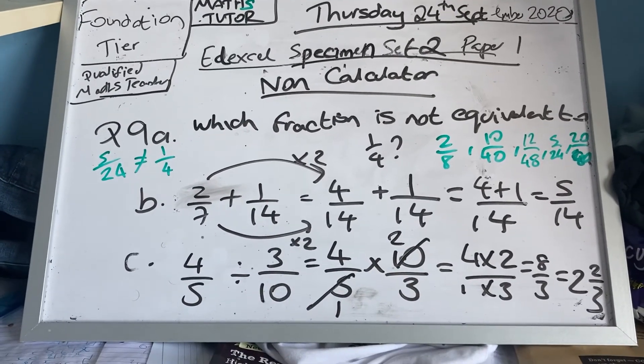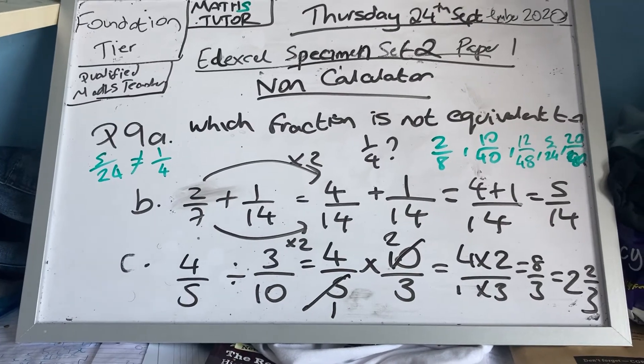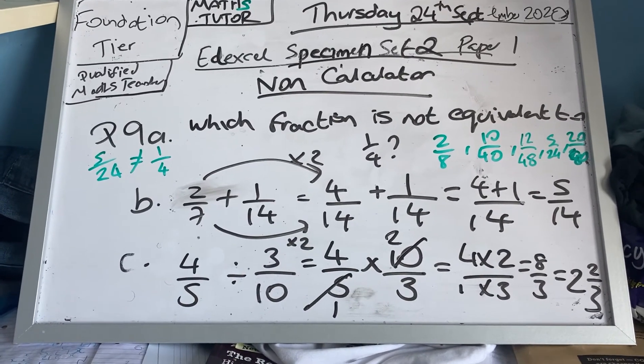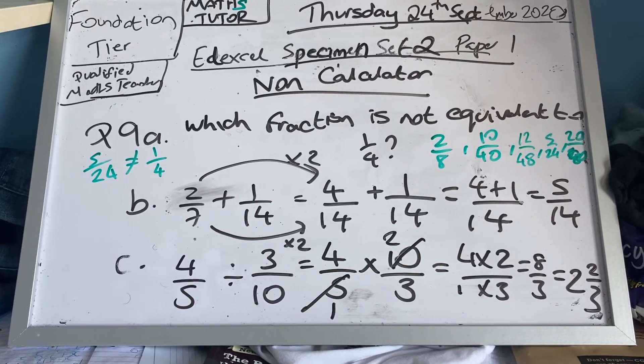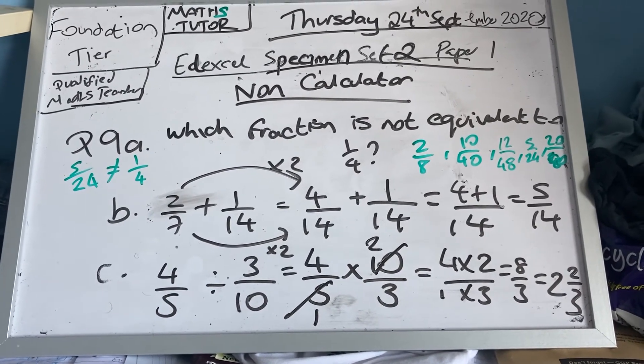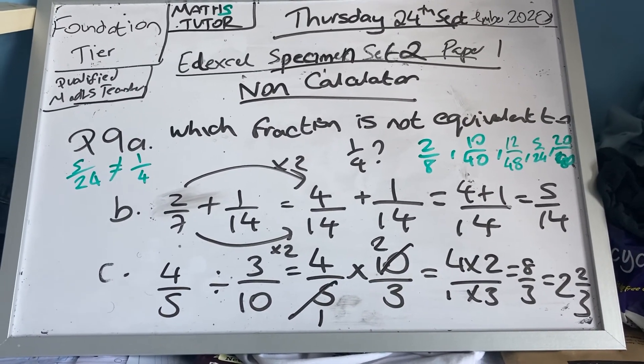So I got four times two over one times three. I divided top and bottom by five. So I got four times two which is eight, and one times three is three.